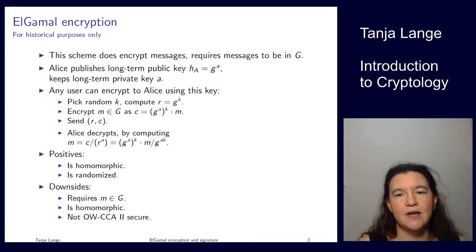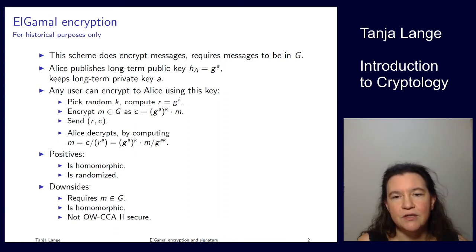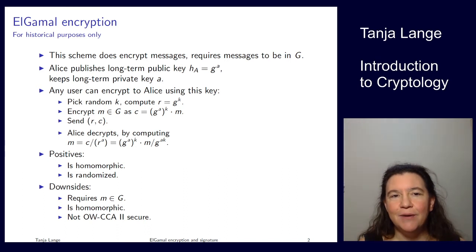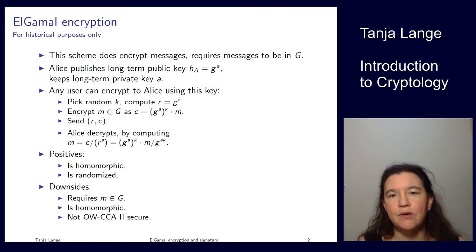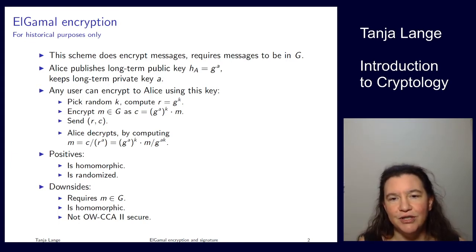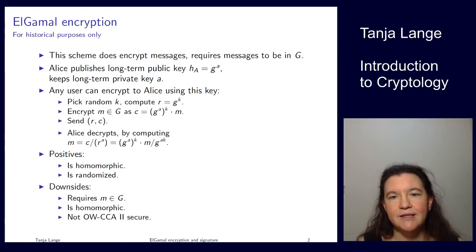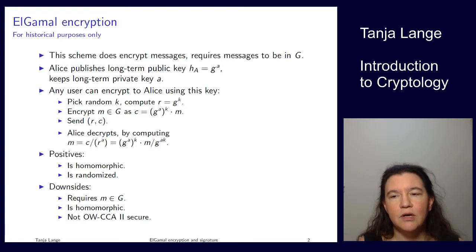Diffie-Hellman was a bit disappointing in that they had only found a key exchange, not an encryption system. ElGamal found a way to use the cryptographic primitive discrete logarithm problem — specifically the computational Diffie-Hellman problem — to build both an encryption system and a signature system. So you can actually build those based on discrete logarithms.